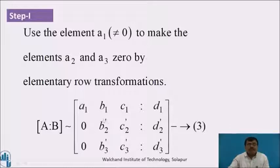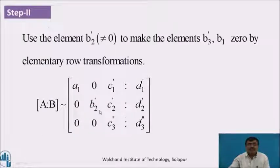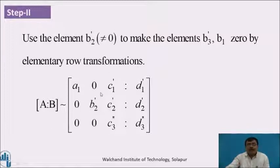Now use the element b2' in step 2 to make b3' and b1 become 0 by elementary row transformation. The matrix becomes equivalent to [a1, 0, c1', d1'; 0, b2', c2', d2'; 0, 0, c3'', d3''].